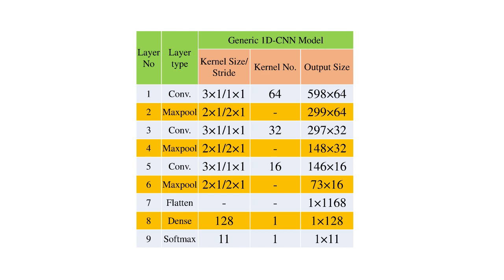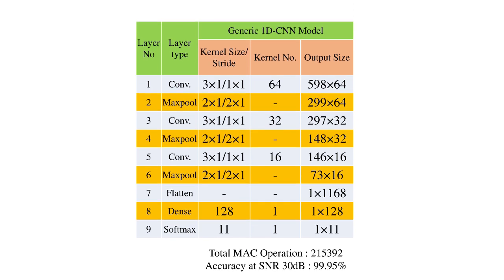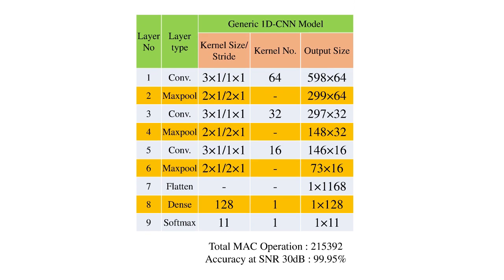The convolution kernels have a data length of 3 with a stride of 1, and their numbers are 64, 32, and 16 respectively for the three convolution layers. In the max pool layer, the subsampling ratio is set to 2:1 with a stride of 2. The flatten layer is just a data organization layer, and in the dense layer 128 neurons have been used.